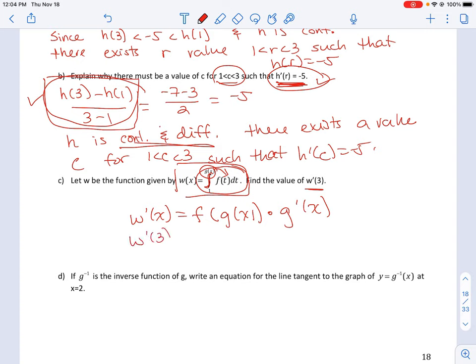Now plug in the number. I'm going to plug in 3 for x. And g(3) is 4, which is in the table. And then these two numbers we can grab from the table: f(4) is negative 1 and g'(3) is 2. So this is negative 2.